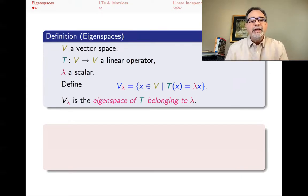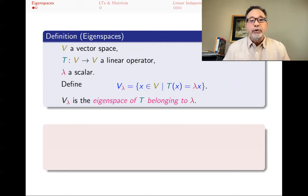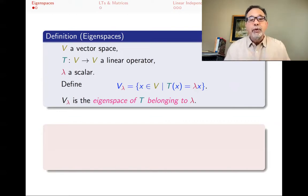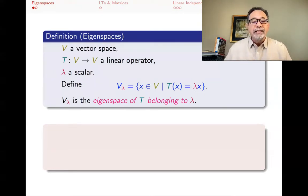This V lambda is called the eigenspace of T belonging to lambda. You can define this regardless of whether or not lambda is an eigenvalue. For any scalar you like, V lambda will never be an empty set — it will always include the zero vector, if nothing else.